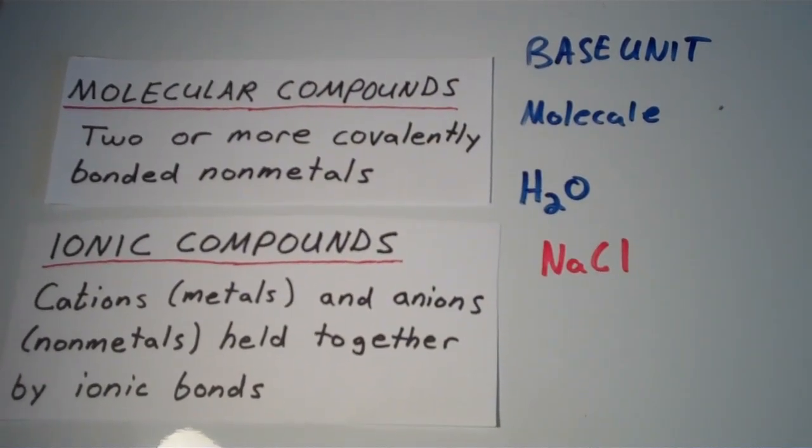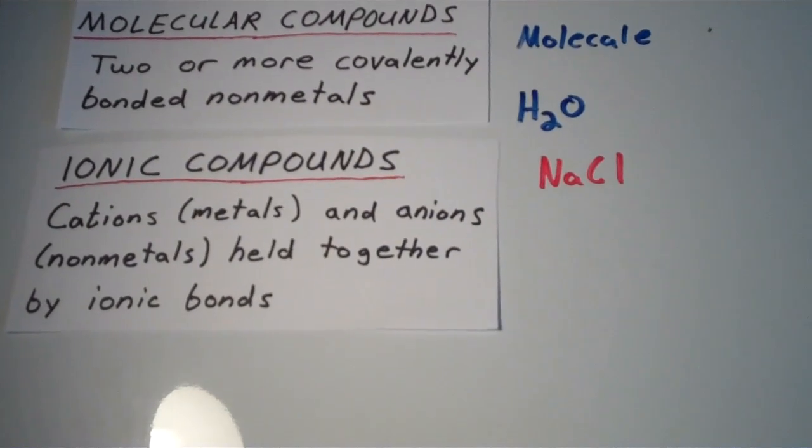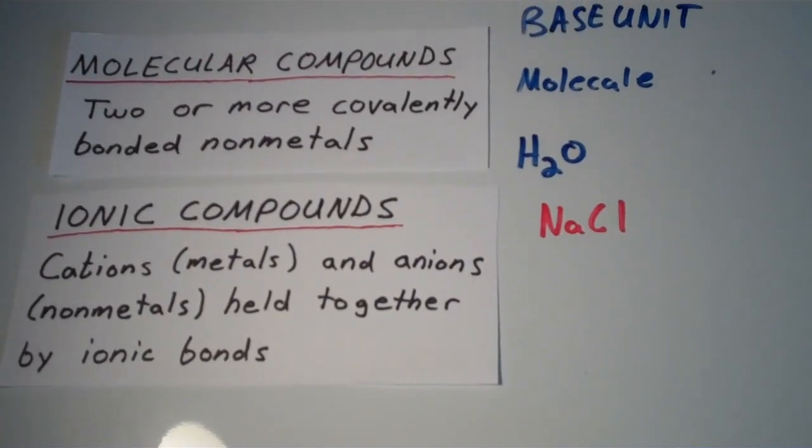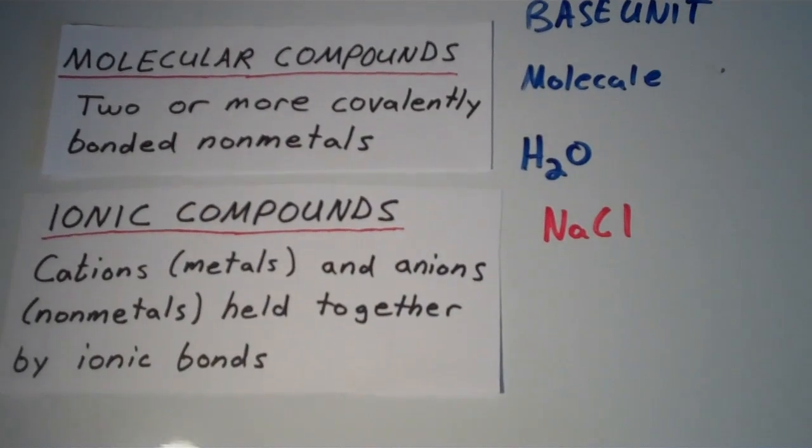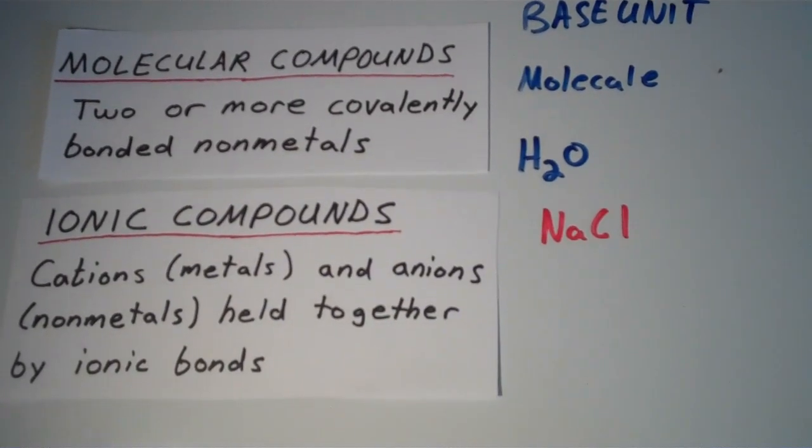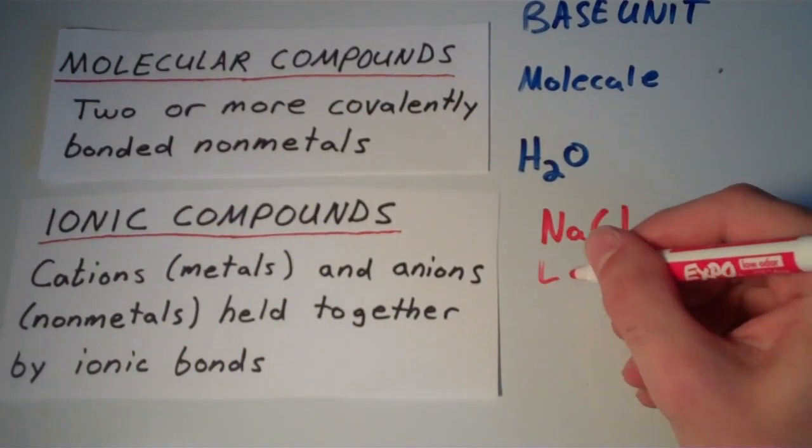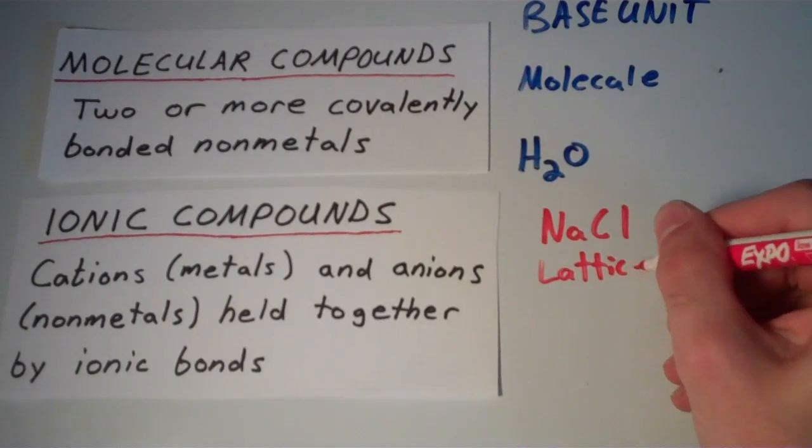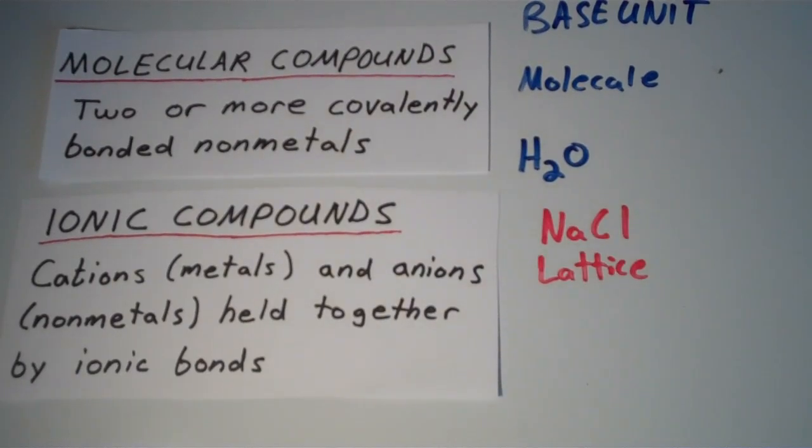But if you were to look at the structure of NaCl, then you wouldn't see these individual discrete entities, these little individual NaCl molecules. That doesn't exist in nature. Instead, we have what's called a lattice, which is a repeating three-dimensional array of these ions.